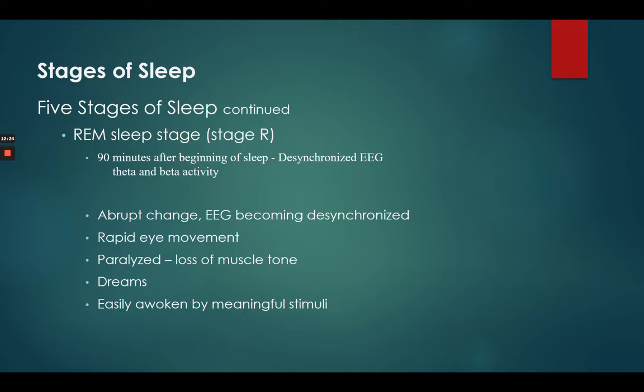During REM sleep — rapid eye movement — our muscle tone is paralyzed, so we don't move. There is a disorder called REM sleep disorder where people don't have that loss of muscle tone and actually act out their dreams. They aren't paralyzed; they get up and act out their dreams. It's pretty rare but relatively dangerous for the person's safety, so it tends to be treated quickly, often through tranquilizers to inactivate the muscles during that time.